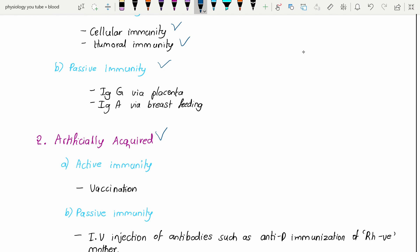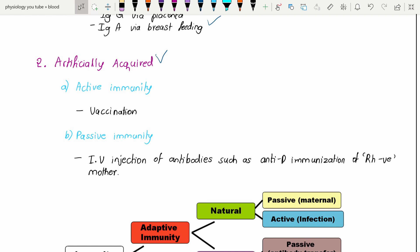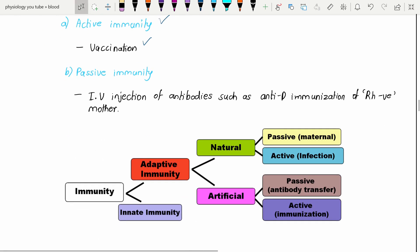Those are IgA via the placenta and IgA via breastfeeding. Then in artificially acquired, the active immunities are by vaccination. Most of you heard that COVID vaccines are available - Covaxin and Covishield. Please take those vaccines because they are involved in artificially acquired immunity that helps us fight Corona.